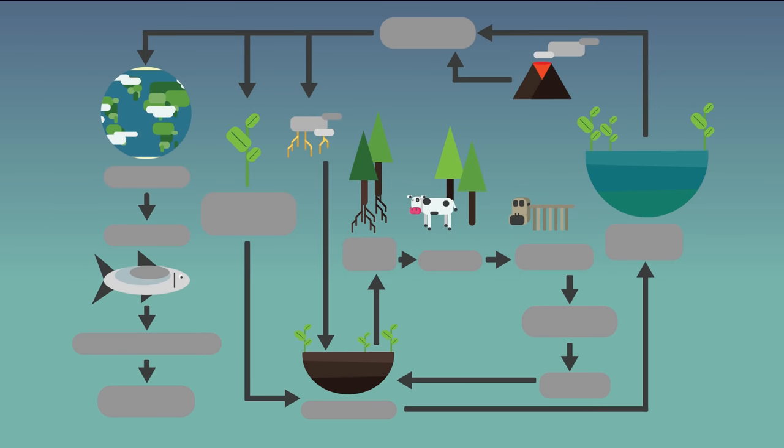In this video we are going to look at the nitrogen cycle. This is the movement of nitrogen through the environment. Nitrogen is continually cycled through the air, soil, and living things.